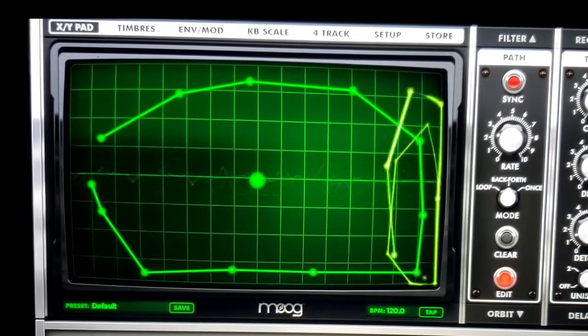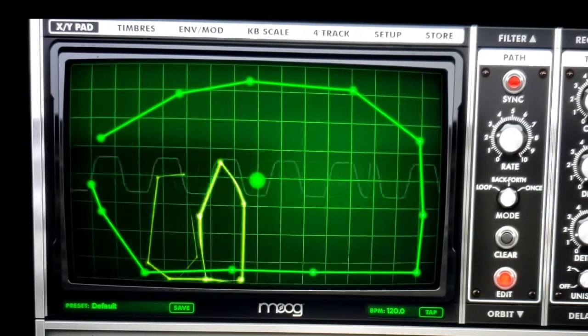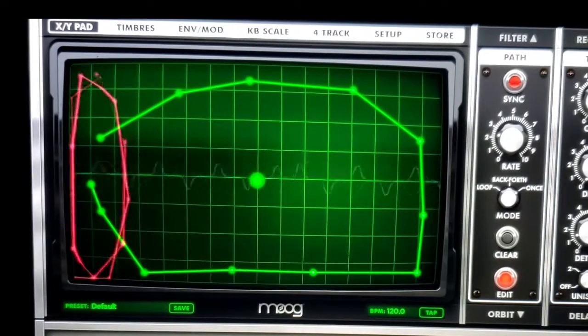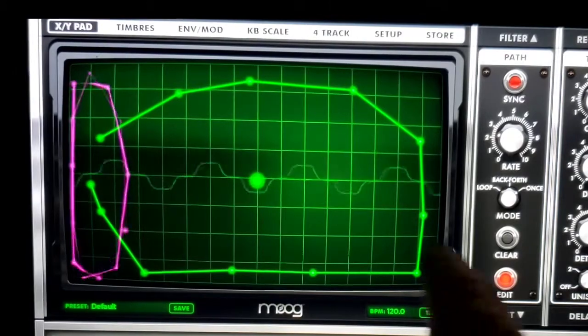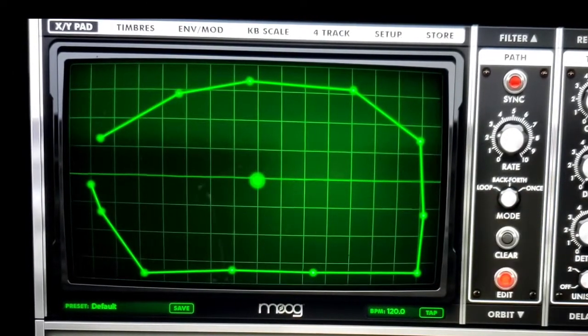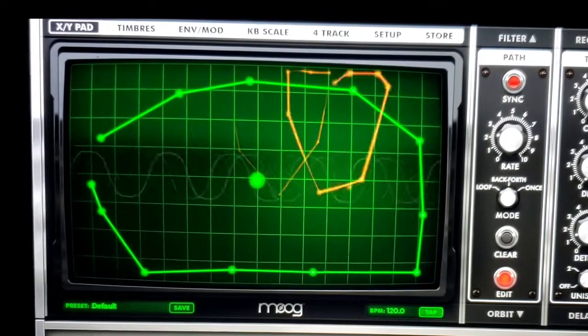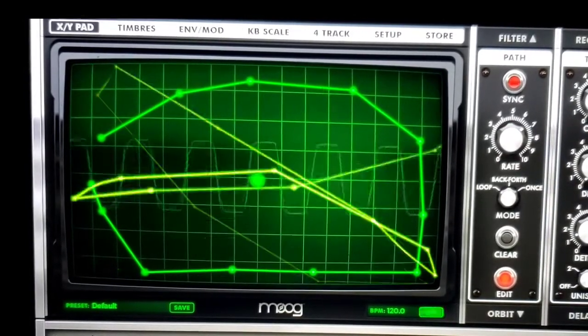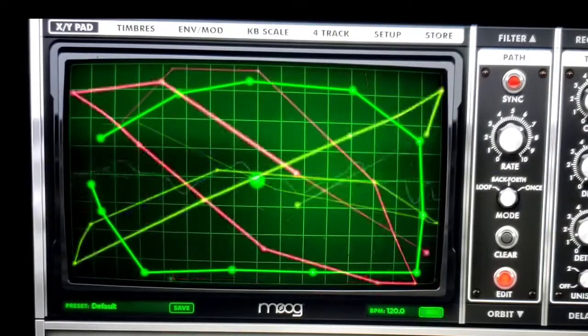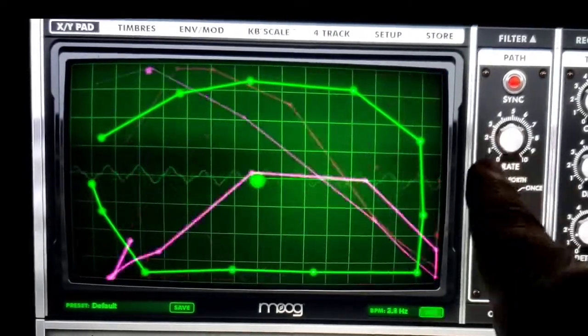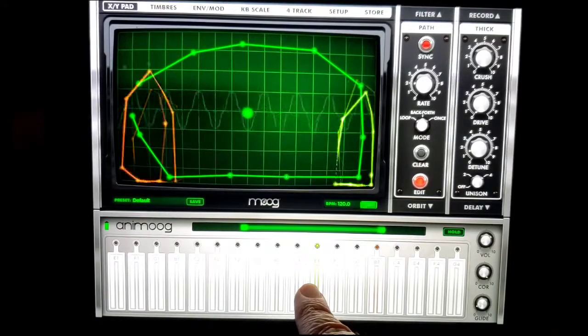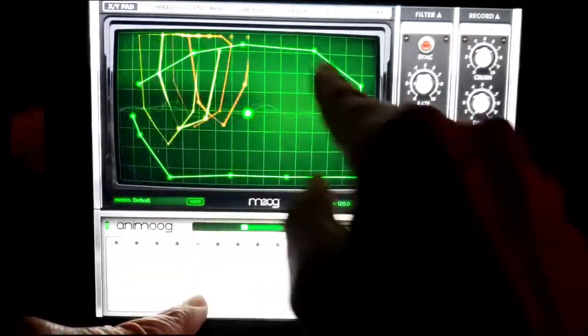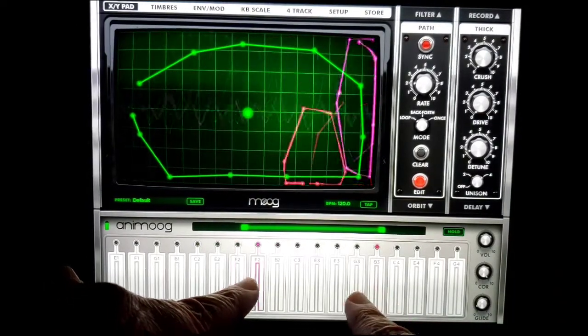See, it's set on back and forth. Put it on once, it just goes through and stays at the end. Put it on loop, it loops around. Change the rate and it gives you a different effect. And you'll notice that there's a different one of these orbits for every key that you press.